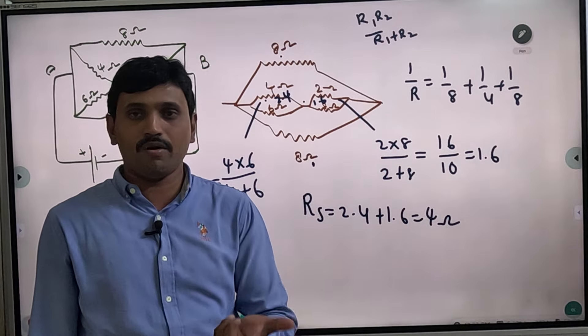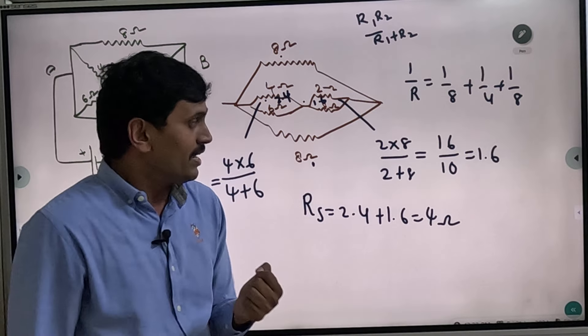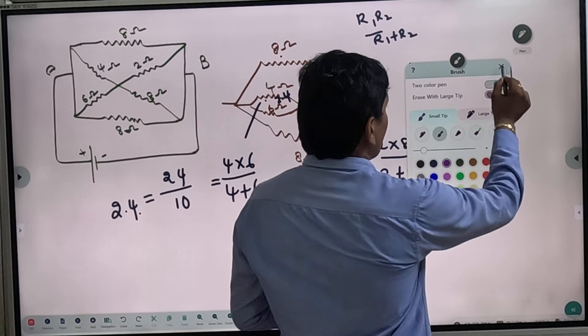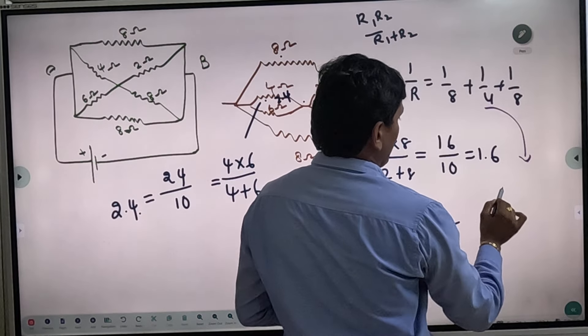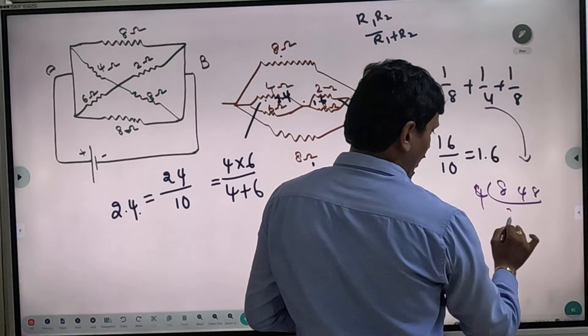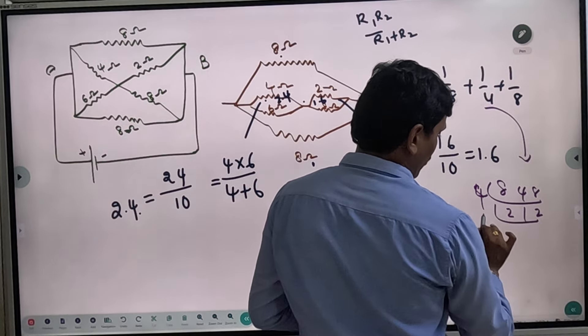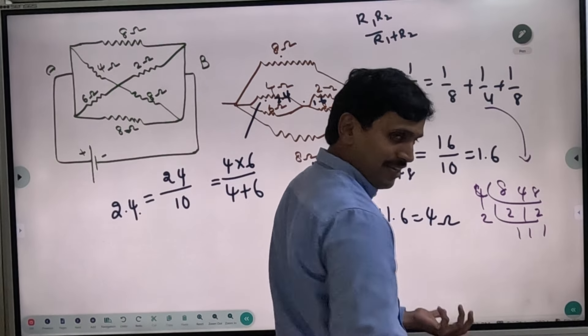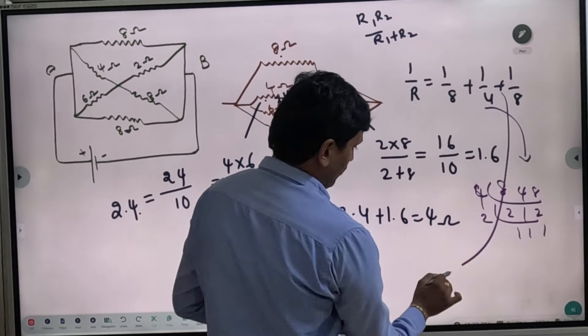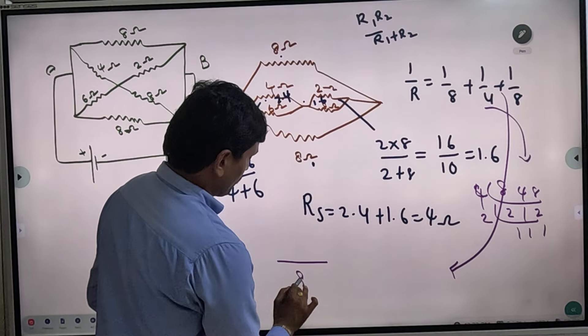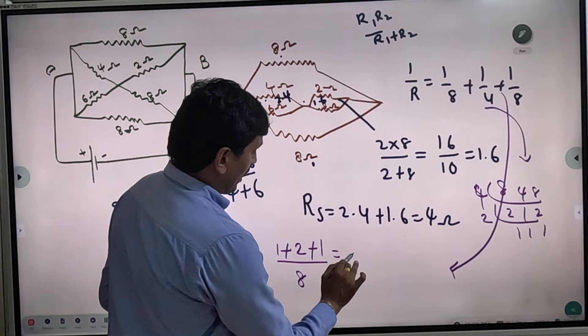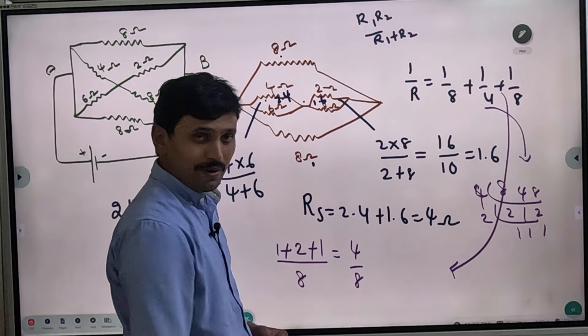We can get 1 by R equals 1 by 8 plus 1 by R2 plus 2 by R1. 1 by 8, 1 by R2... 4 by 60.